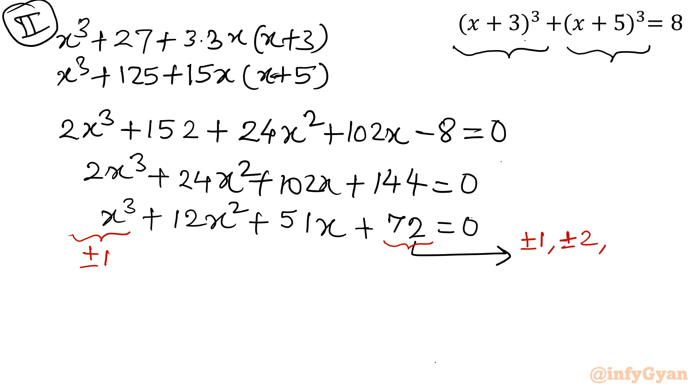If you will write the factors of 72, then you will have the list is very big this time. Plus minus 2, plus minus 3, plus minus 4, plus minus 6, plus minus 8, plus minus 9, plus minus 12, plus minus 18, plus minus 24, then plus minus 36 and 72.